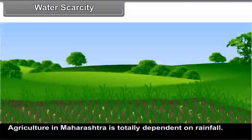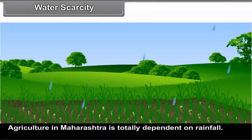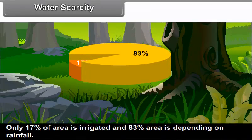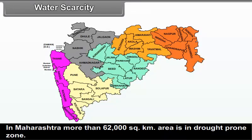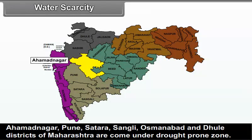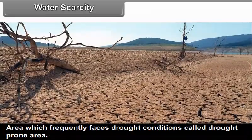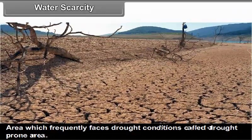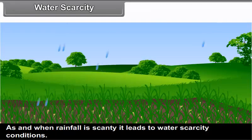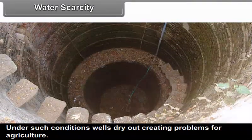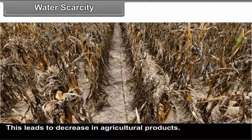Water scarcity: Agriculture in Maharashtra is totally dependent on rainfall. Only 17% of area is irrigated and 83% of area depends on rainfall. In Maharashtra, more than 62,000 square kilometers area is drought prone zone. Ahmadnagar, Pune, Satara, Sangli, Osmanabad and Latur districts of Maharashtra come under the drought prone zone. Areas which frequently face drought conditions are called drought prone areas. When rainfall is scanty, it leads to water scarcity conditions. Under such conditions, wells dry out creating problems for agriculture, which leads to decrease in agricultural products.